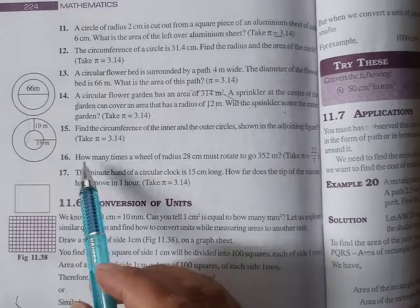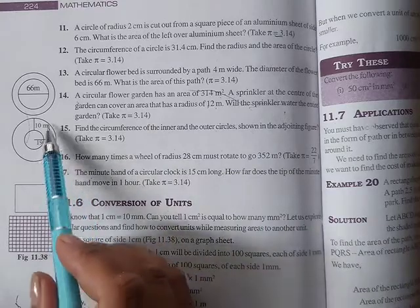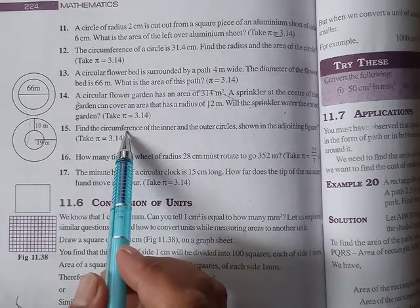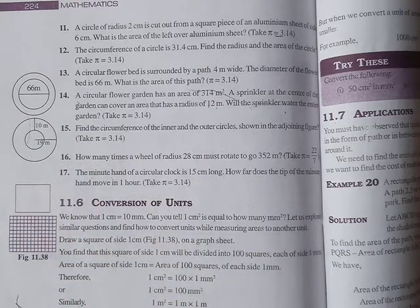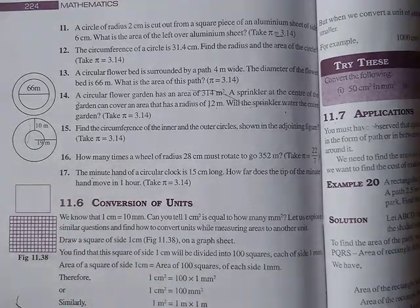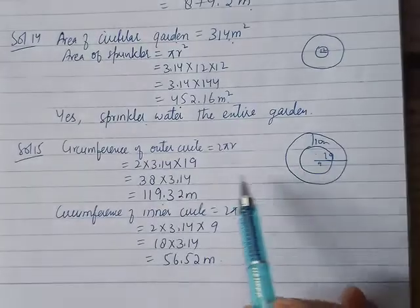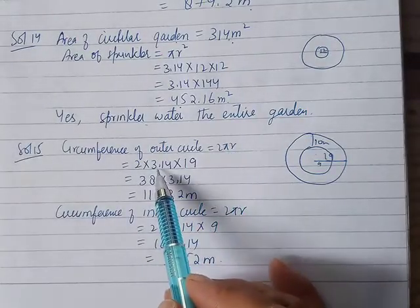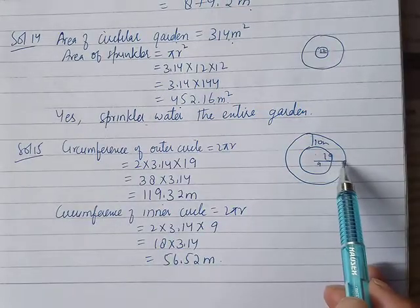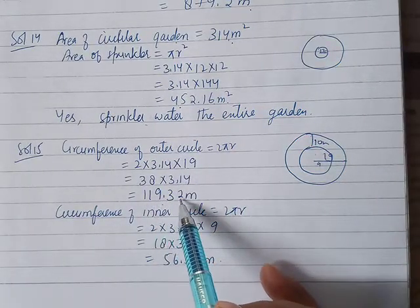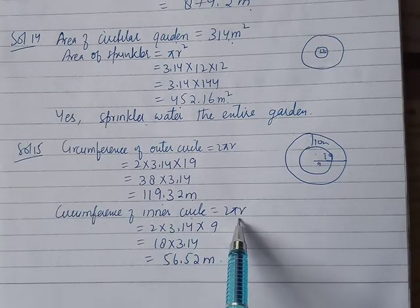The next question is number 15. Find the circumference of the inner and outer circles shown in the adjoining figure. The circumference of the outer circle is the formula 2 pi r. The circumference of the outer circle is 2 times pi, 3.14, times the radius 19, so it is 119.32 m. To find the circumference of the inner circle, 2 pi r, 3.14 times the radius.